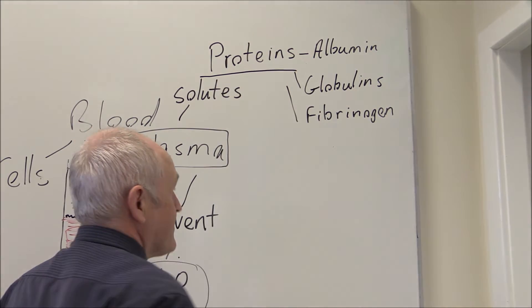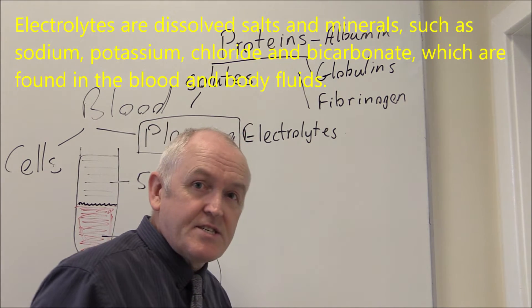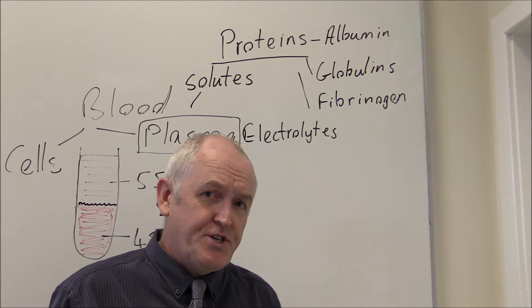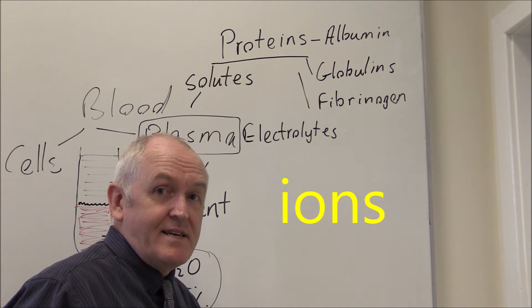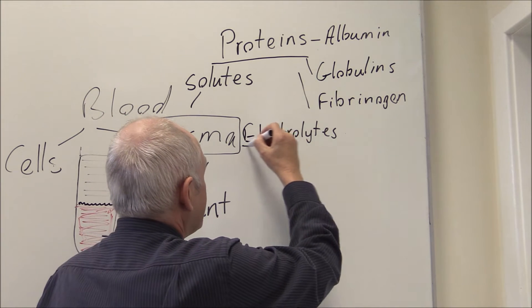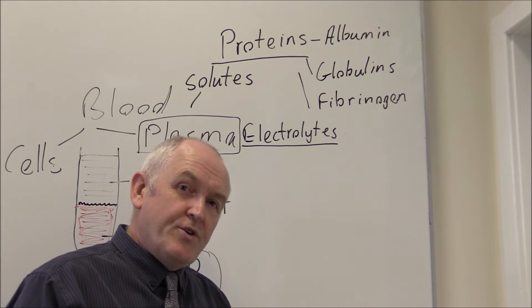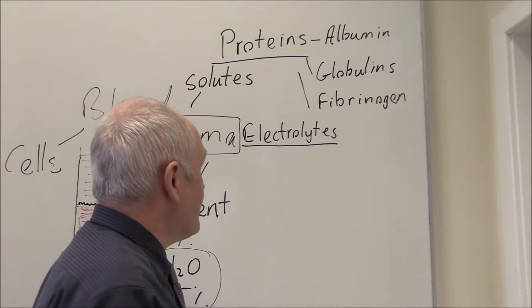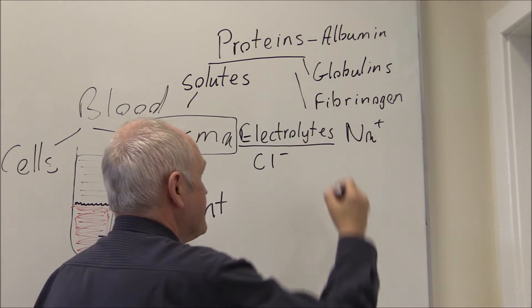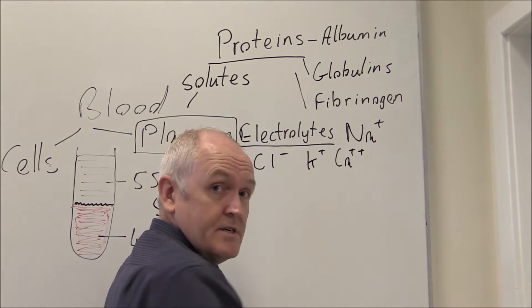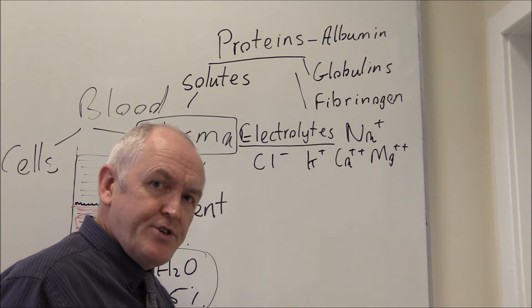The plasma contains proteins, and it also contains electrolytes. Electrolytes are ions - they are atoms with a charge - and these are very important because we need the correct distribution of electrolytes on both sides of the cell membrane in excitable cells. The volume of electrolytes has to be finely regulated and homeostatically controlled. The common ones are sodium (Na+), chlorine (Cl-), potassium (K+), calcium (2+), and magnesium (2+), present as ions in solution in the plasma.